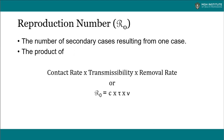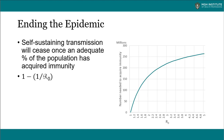These three factors — contact rate, transmissibility, and removal rate (which is the inverse of the duration of infectiousness) — their product is the reproduction number, which is the number of secondary cases resulting from one case. One person sick with COVID-19 produces some number of new cases. Right now, that looks to be around 2, meaning about half of the population will need to develop immunity. The inverse of the reproduction number is the proportion of the population that needs immunity for self-sustaining transmission to be extinguished.